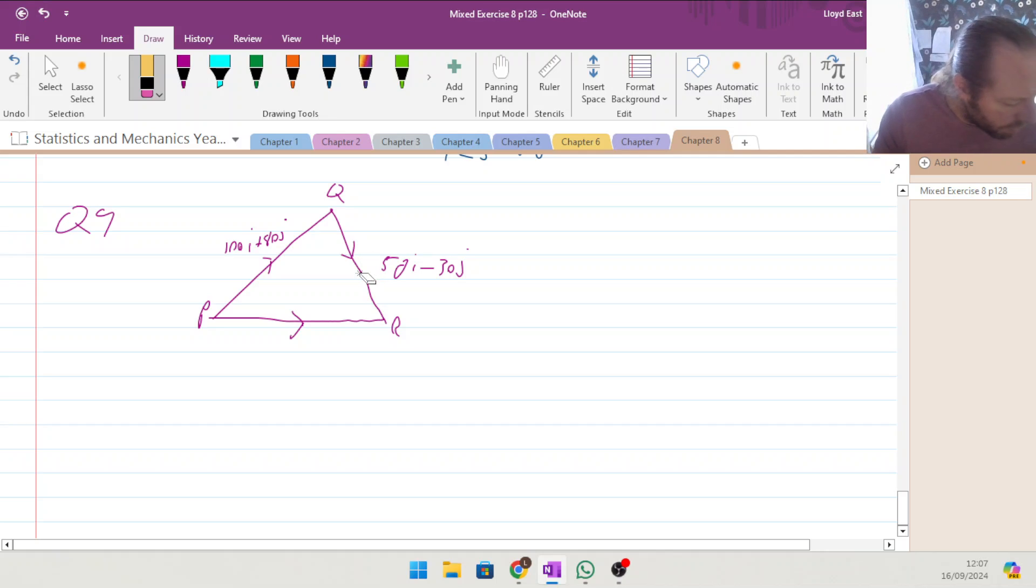So what's the question? Find the magnitude of the displacement P to R. So basically we're looking for the length of line P, R. So first off, what is P, R? P, R is going to be equal to P, Q plus Q, R, which is 100i plus 80j plus 50i minus 30j. So we end up with 150i and 50j.